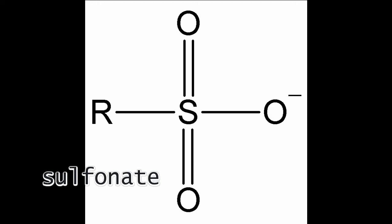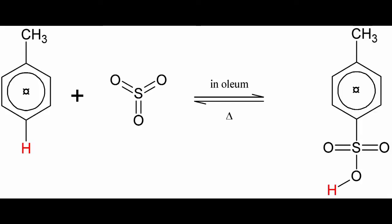Let's first take a look at how sulfonates are prepared in general. In this example, toluene, otherwise known as methyl benzene, is heated in oleum. Oleum is sulfuric acid with free sulfur trioxide dissolved in it. In an equilibrium reaction, the hydrogen atom in para position on the benzene ring is substituted with the sulfonate group.